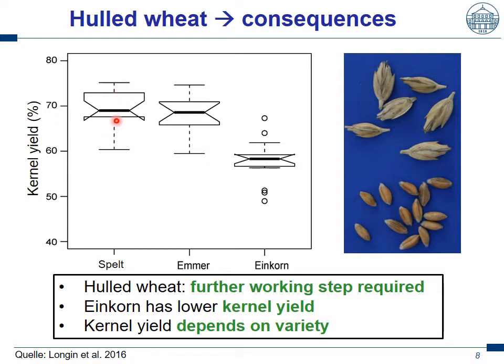Furthermore, we see a big difference between varieties. This spelt variety had only a kernel yield of 60%, while another had 75%. Thus it's also interesting for the miller to look at kernel yield of varieties. So we have several disadvantages: de-hulling costs money, and the spikelets must be stored in a larger volume. But we have the advantage that the kernels are tightly closed by the husks in the field until inside the mill. We can imagine that a lot of pollution from the air or from fungi grown on the ears is on the husks but not on the kernels — in contrast to bread wheat where they are on the kernels.